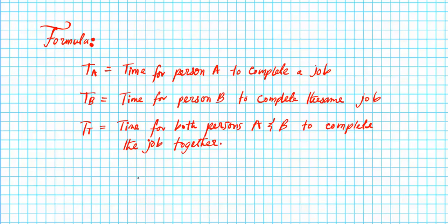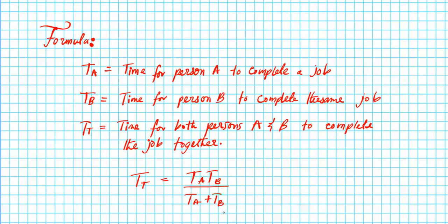So what is the relationship? This is the formula right here. The time spent if they're working together on a job is equal to the product of your times — time for A times time for B — divided by the sum of the times, time A plus time B. Now this is for two people. If you have three people, all you have to do is multiply time C on the top and add time C to the bottom. So you multiply upstairs and you add downstairs.